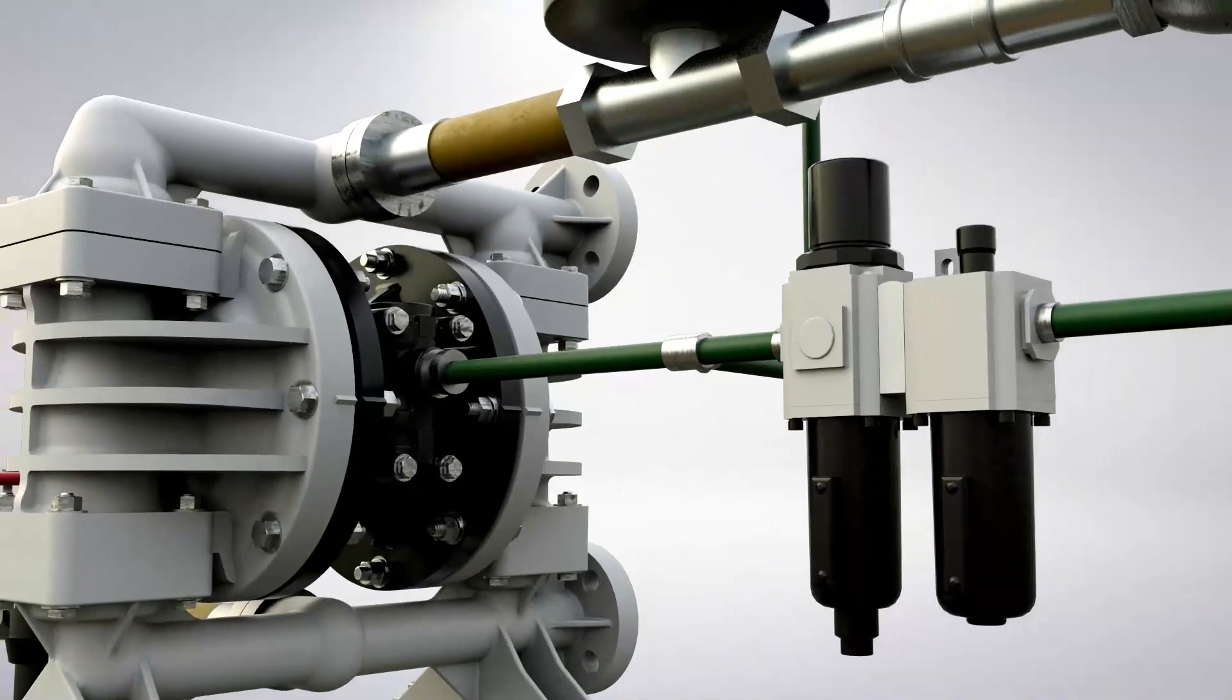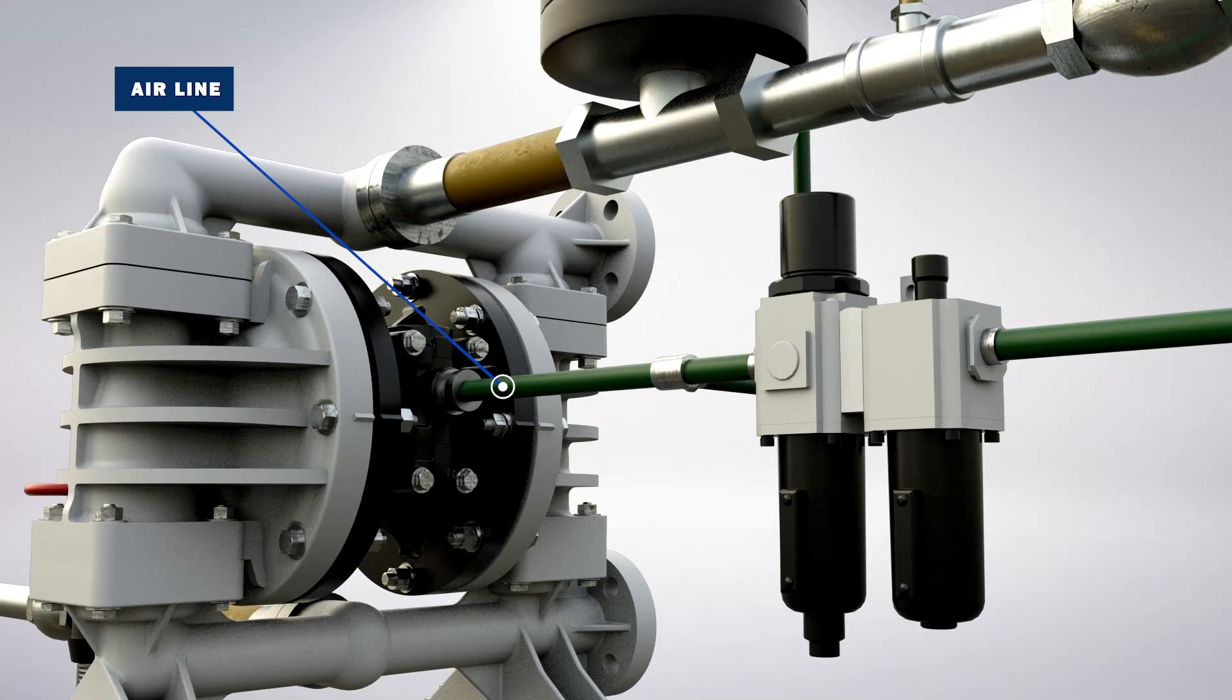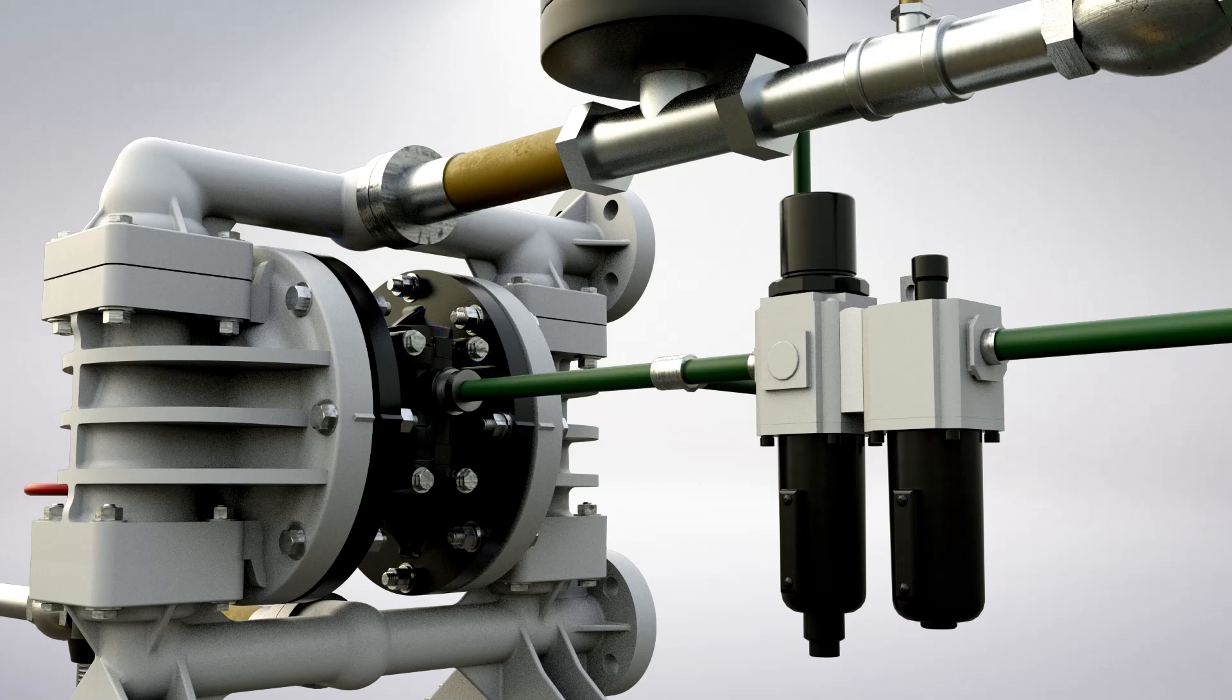Every pump location should have an air line large enough to supply the volume of air necessary to achieve the desired flow rate. The air should be dry and free from debris to prevent damaging the pump's air valve.